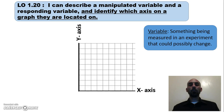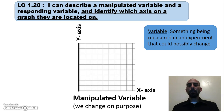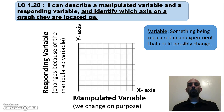Now let's identify which axis the manipulated variable is placed on and which axis the responding variable is placed on. The manipulated variable is always located on the x-axis. One student remembered this with the X-Men: the x-axis and the manipulated variable both start with the word 'man.' The responding variable is always on the y-axis.